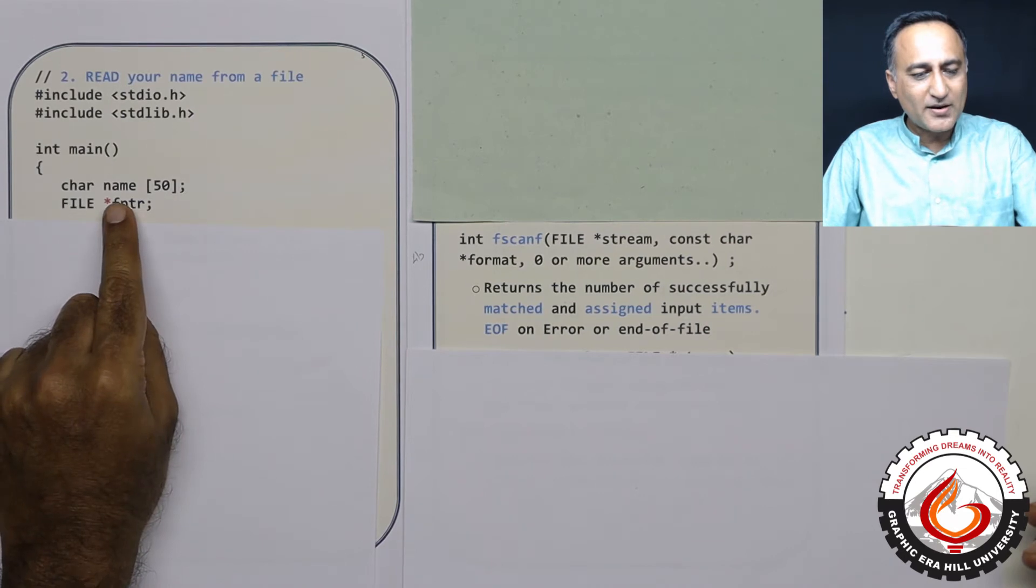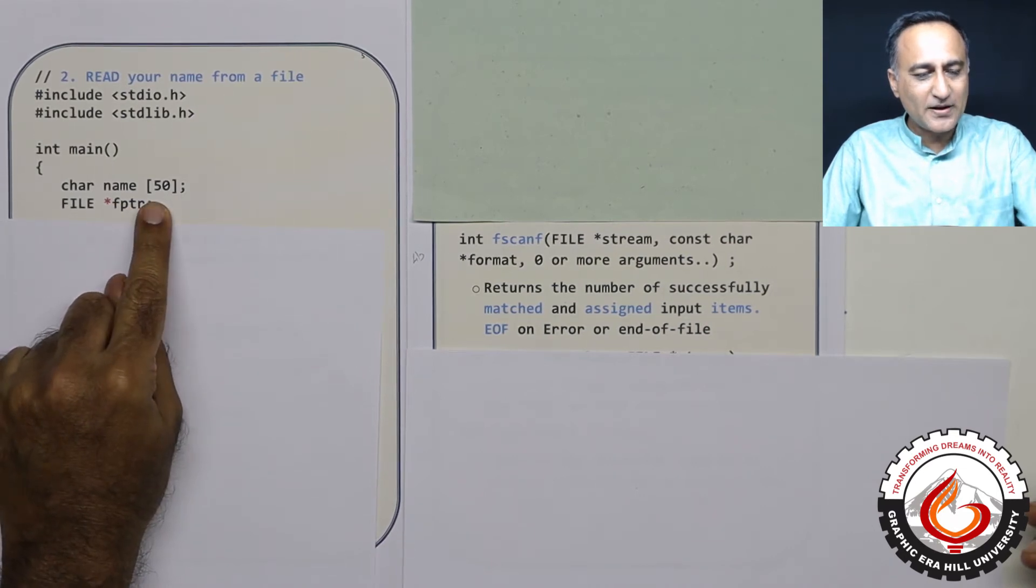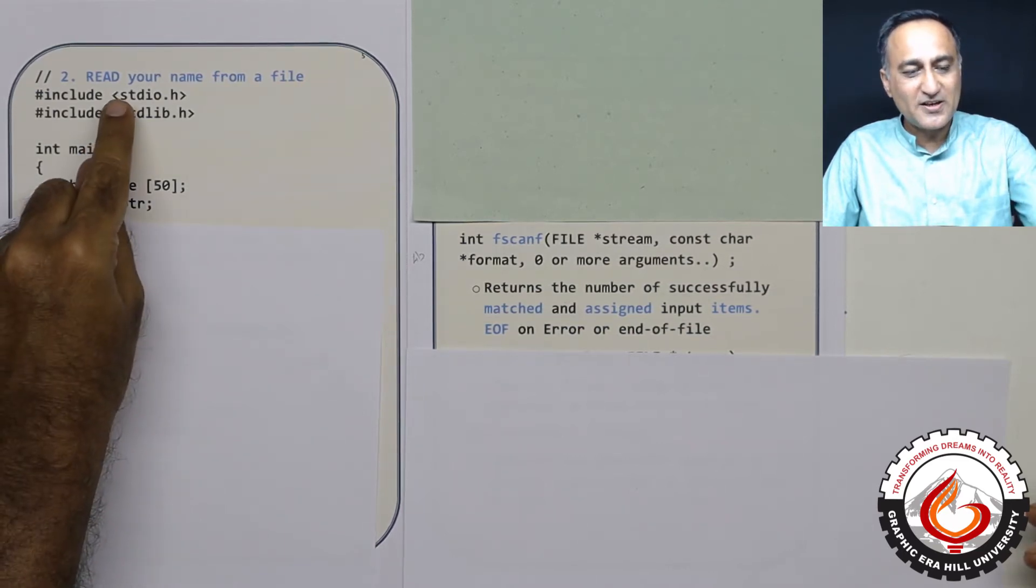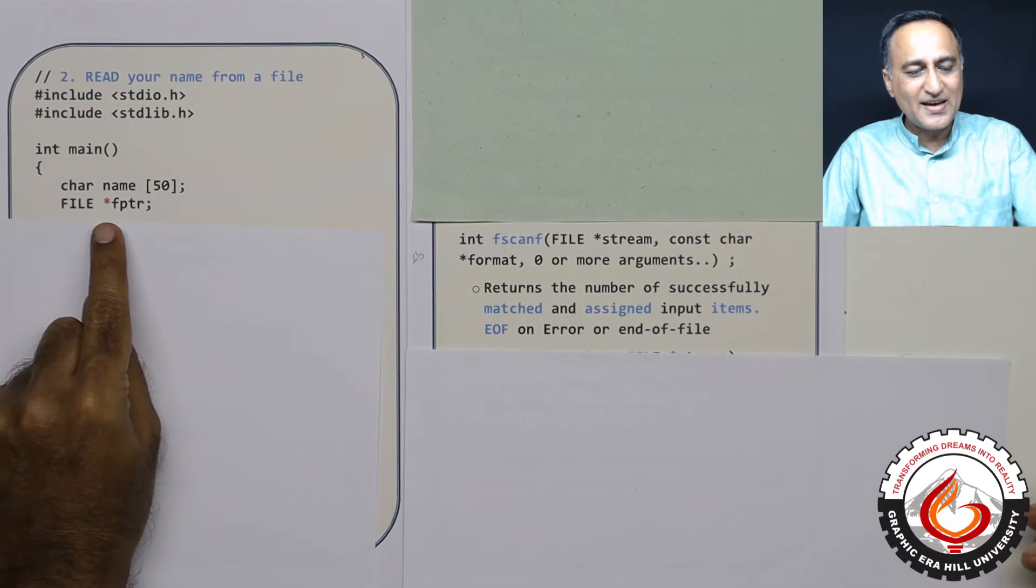So I have defined an array of characters name of size 50. I have defined a pointer to a file, a structure which is defined in stdio.h as fptr.